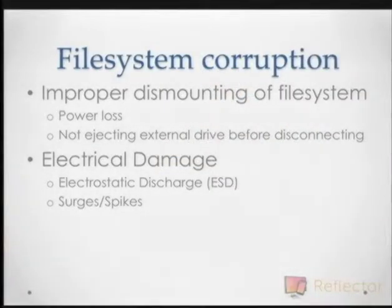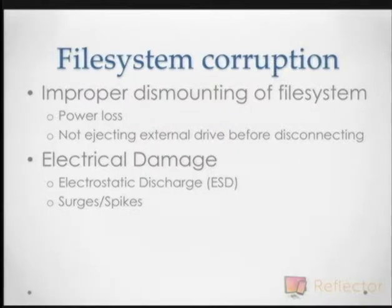Electrical damage can also cause file system corruption. Electrostatic discharge — ESD, commonly known as static electricity — can happen to your computing equipment. In a dry environment, especially during winter, if you're handling external media or working inside your computer replacing parts, you need to follow proper ESD practices and make sure you're grounded to the machine. Power surges and spikes can also cause file system corruption by causing the machine to go down prematurely.